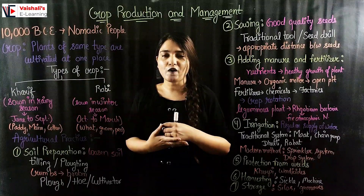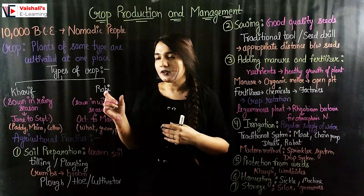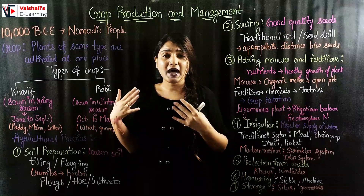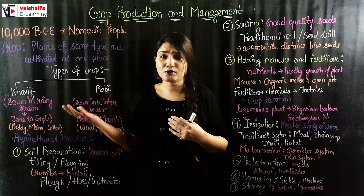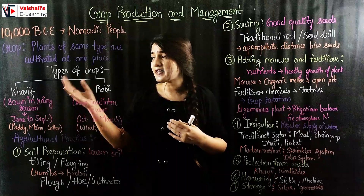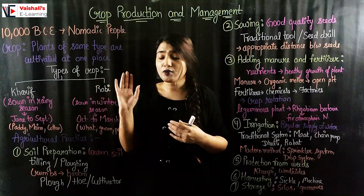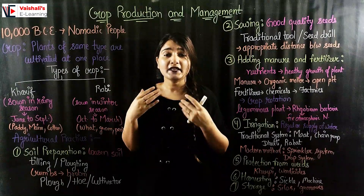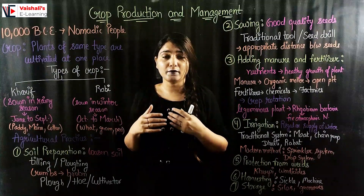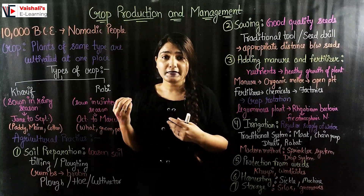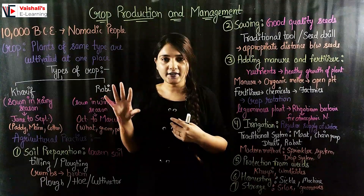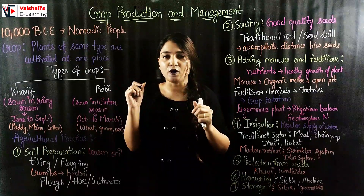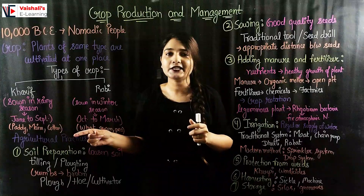Examples of Kharif crops include paddy, maize, cotton, groundnut, and soybean. Examples of Rabi crops include wheat, gram, pea, maize, and vegetables grown in the winter season. Now moving on towards the agricultural practices.